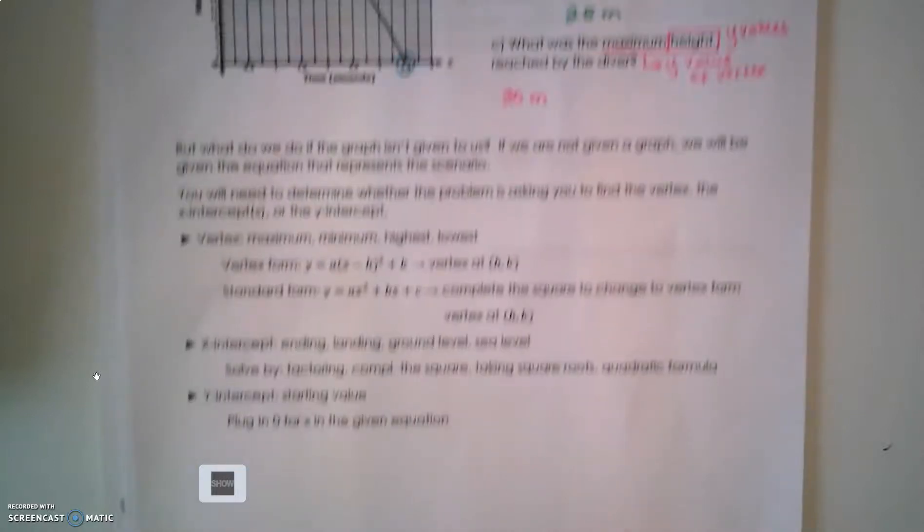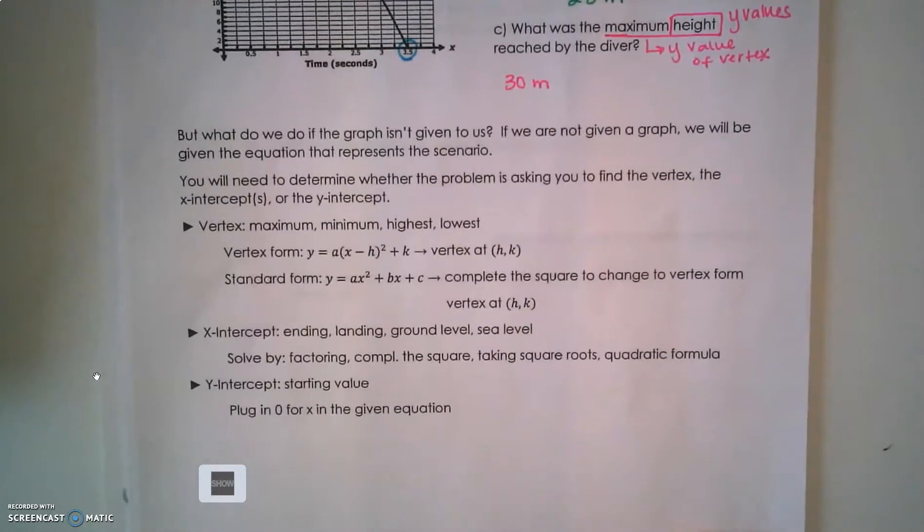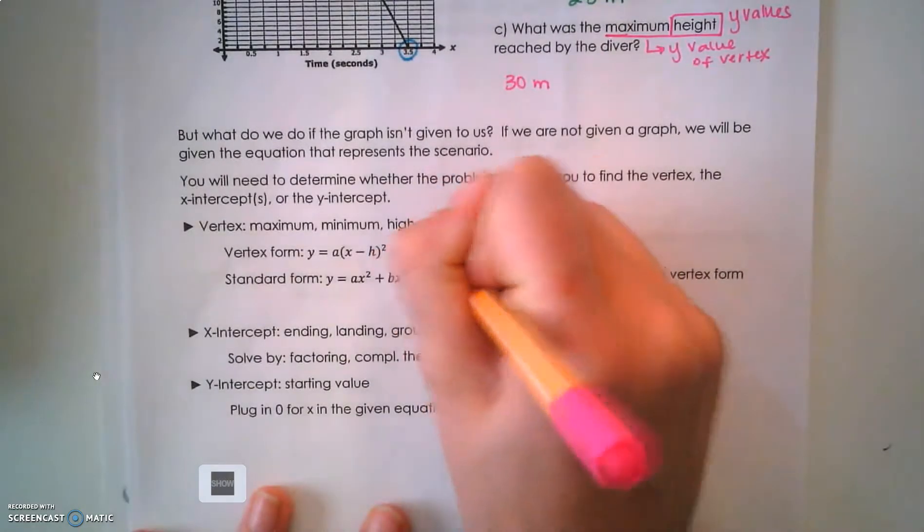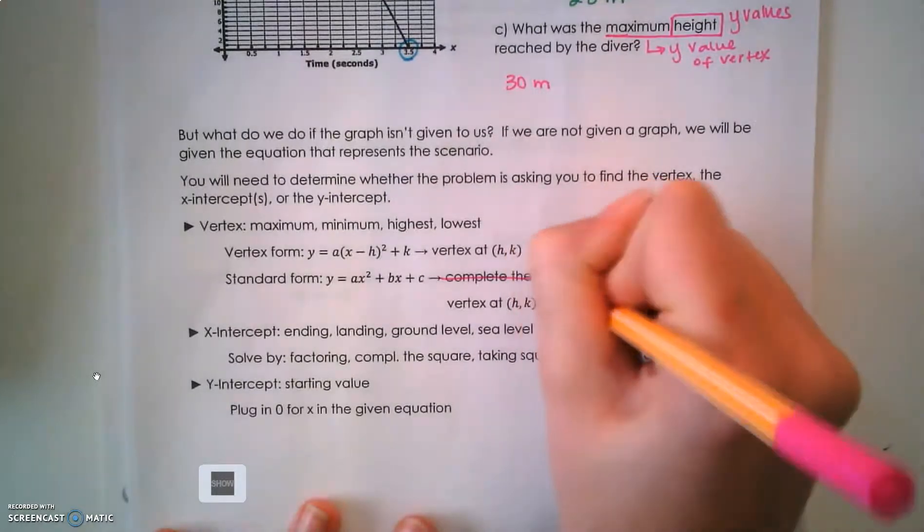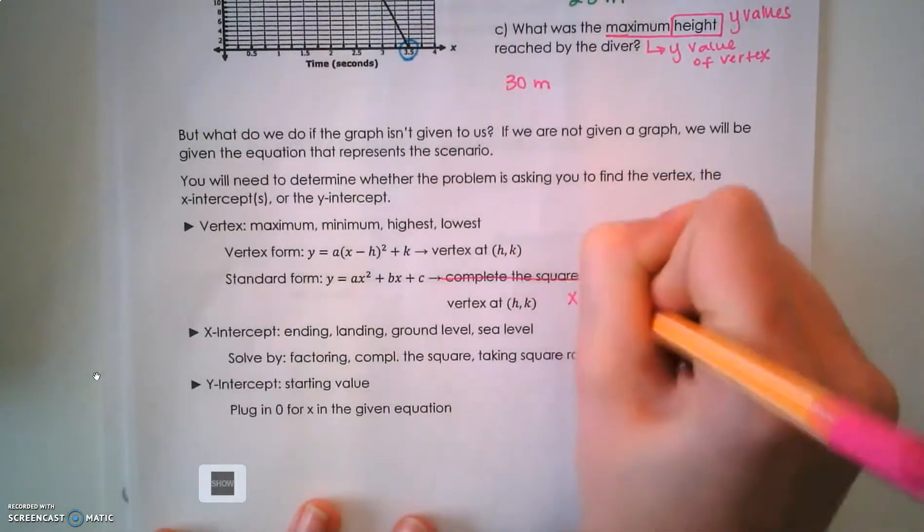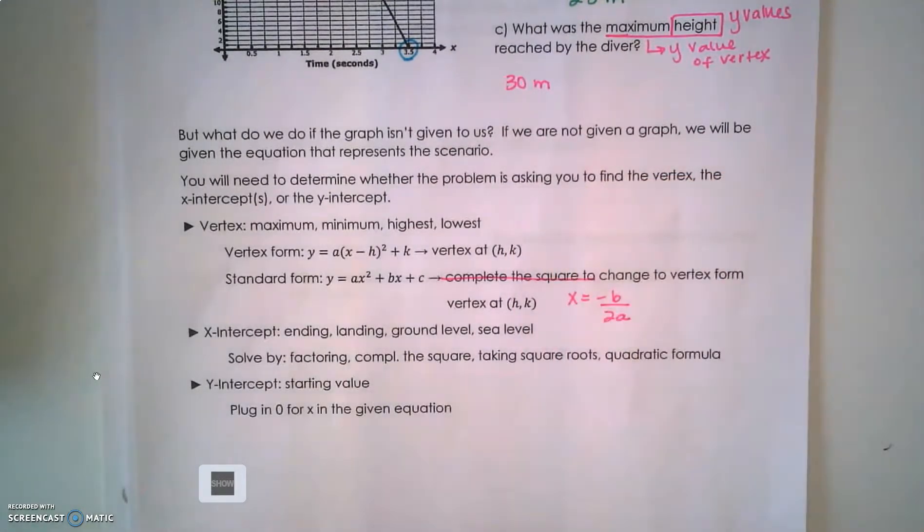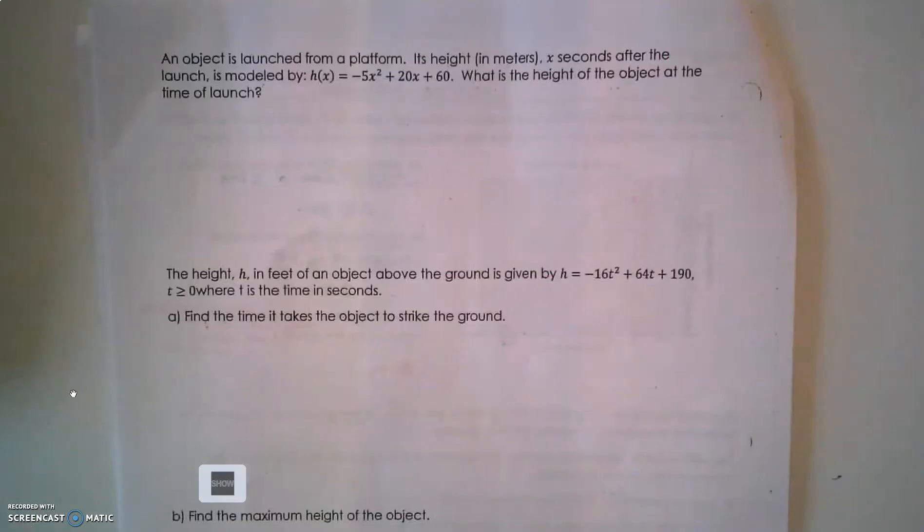This little flow chart here tells you depending on what your question is asking, it's going to be the methodology and what we're going to use to solve. In standard form, however, we are not going to complete the square unless you remember how to and you love to. We're going to use that opposite of b over 2a.